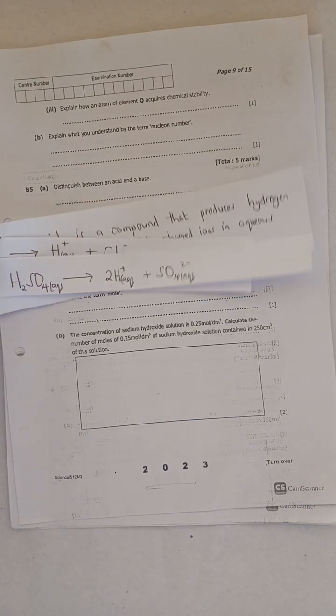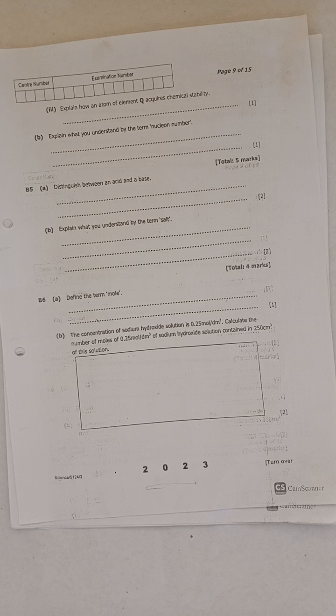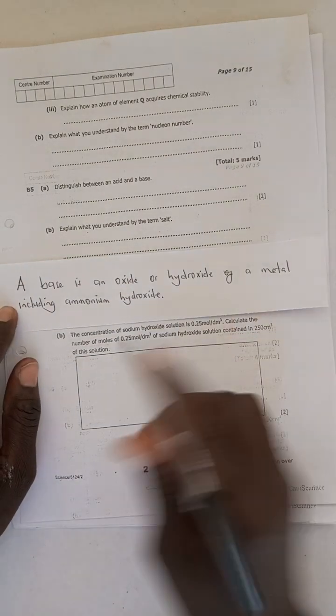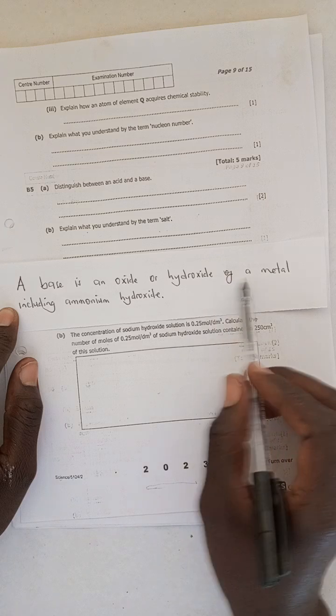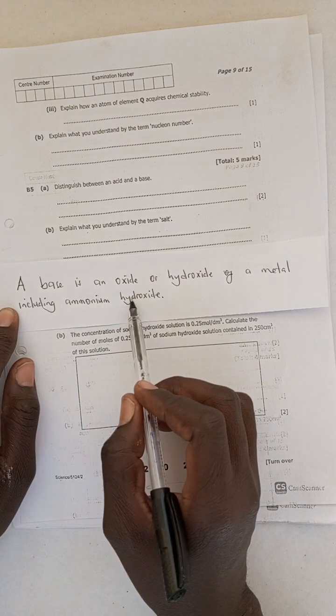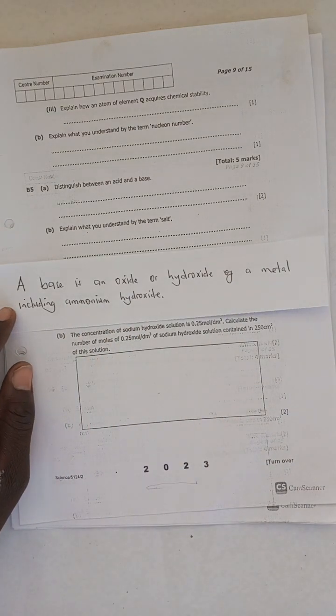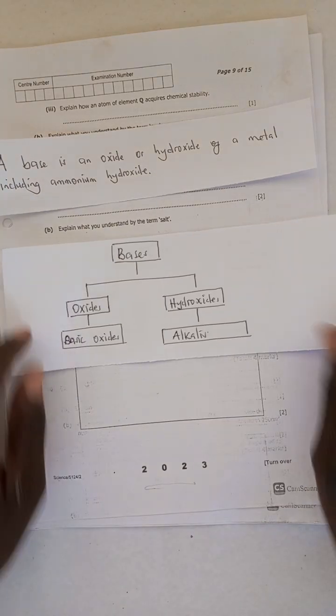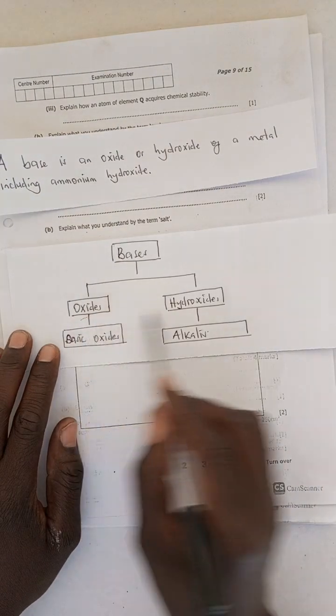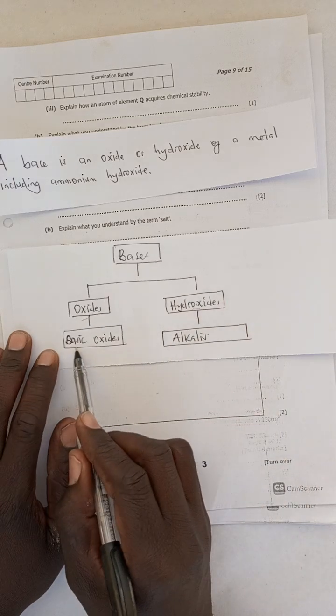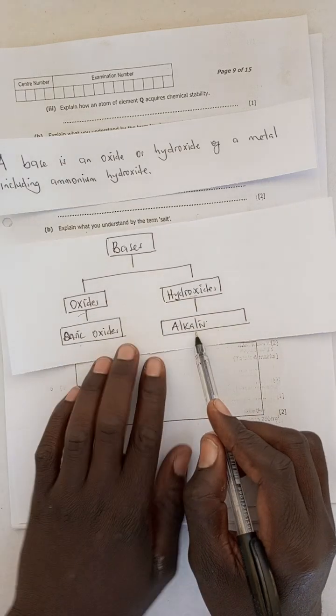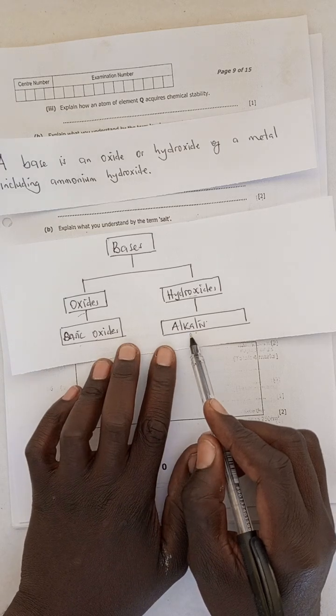Now what is a base? For you to want to differentiate the acid from a base, you also need to know what a base is. A base is an oxide or hydroxide of a metal including ammonia hydroxide. Now you need to understand that the bases are basically categorized into two. We have the oxides and hydroxides. The oxides are called basic oxides, while the hydroxides are called alkalis.